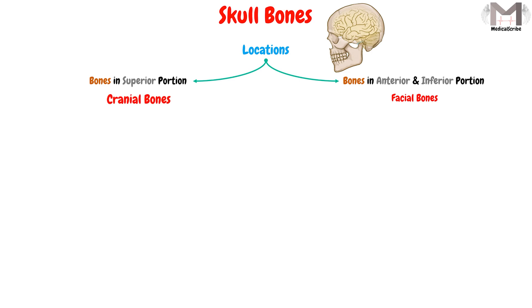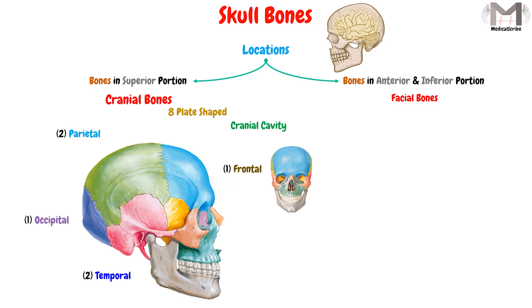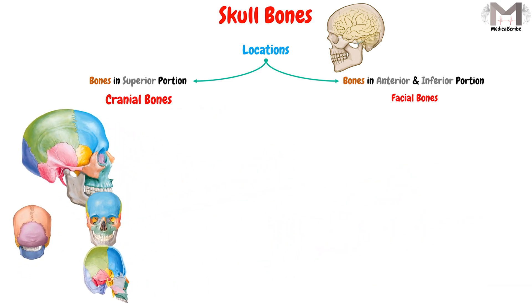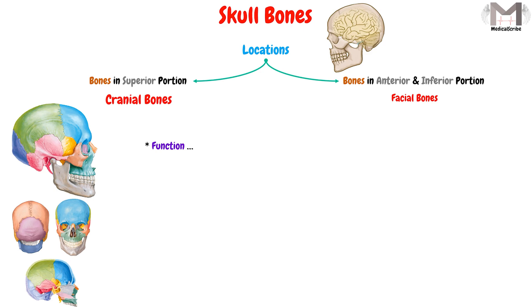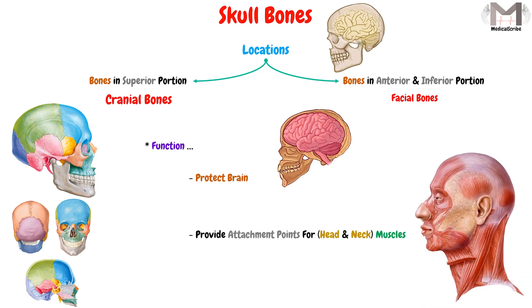Regarding the cranial bones, they are 8 blade-shaped bones that will form the cranial cavity, which is the bulk of the skull. These 8 bones are: 2 parietal bones, one on each side of the skull; 2 temporals; 1 frontal; 1 occipital; 1 ethmoid; and 1 sphenoid. The function of the cranial bones is they will protect the brain, which is a very critical issue for the human, and also they will provide an attachment point for the muscles of the head and neck.